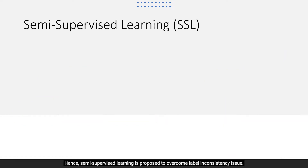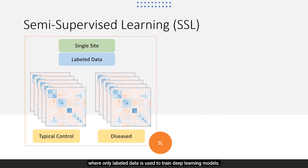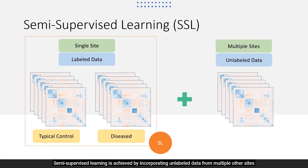Hence, semi-supervised learning is proposed to overcome the label inconsistency issue. Most of the existing work involves supervised learning (SL), where only labeled data is used to train deep learning models. Semi-supervised learning is achieved by incorporating unlabeled data from multiple other sites into the training routine to help deep learning models learn better intermediate representations.